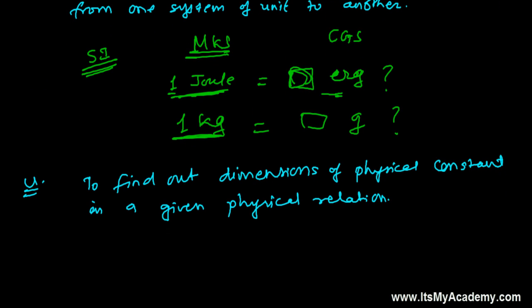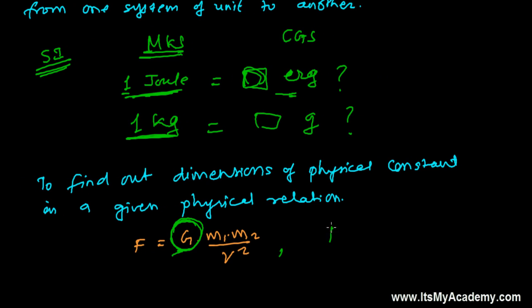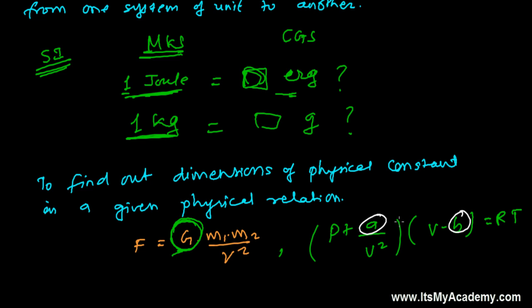What I mean is that for any physical relationship — for example, taking Newton's law of gravitation: F equals G times M1 times M2 over R squared — by the use of dimensions you can find out the dimension of the gravitational constant G. Similarly, in the Van der Waals equation, which is (P plus A over V squared) times (V minus B) equals RT, the constants A and B appear. By using dimensional analysis, we can easily find out the dimensions of A, dimensions of B, and many more such things — finding the dimensions of physical constants in a given physical relation.